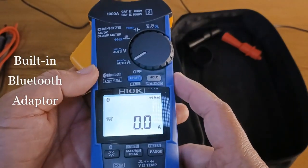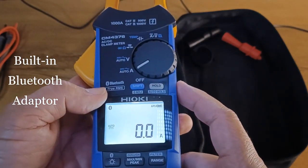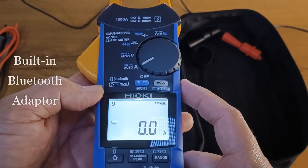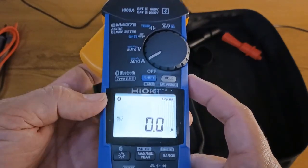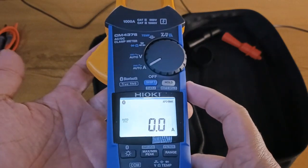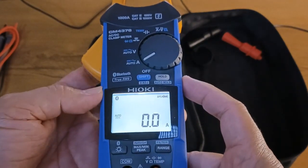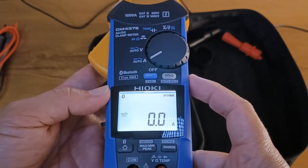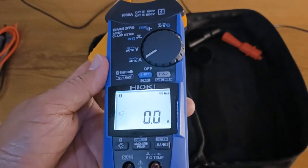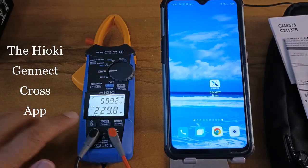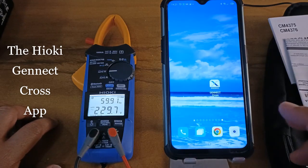And the other function of the 4376 is that it has a built-in Bluetooth adapter, which allows the instrument to communicate to a mobile phone or a mobile device through the Hioki Genect Cross App. Now let's try to connect the instrument with the Hioki Genect Cross App.